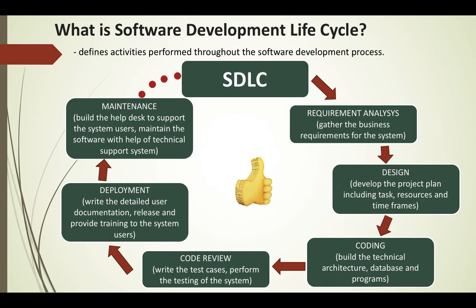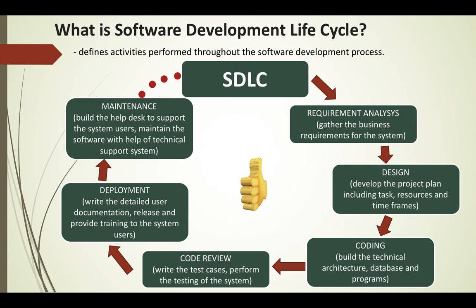Then it goes to the QA team for testing. The code gets reviewed and they perform complete system testing, sharing test cases. Then it goes to the deployment team, who get the detailed user document from the technical writer and release the document and the software application or product together. Next comes maintenance, where a help desk is built to support system users and maintain the software with the help of a technical support system.